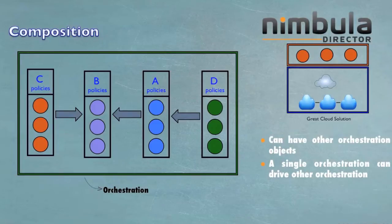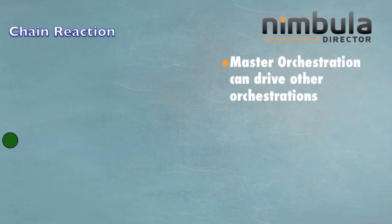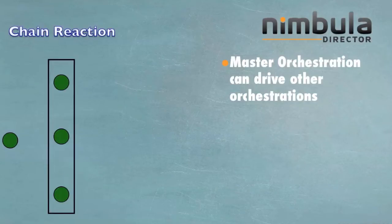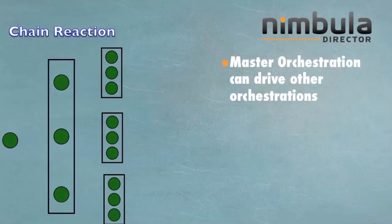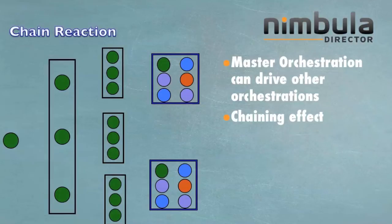To explain composite orchestrations better, I have the next slide. A master orchestration can drive other orchestrations, which in turn can drive real objects. It's a chaining effect.